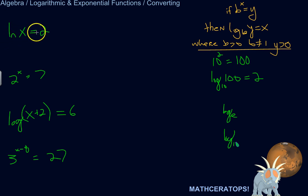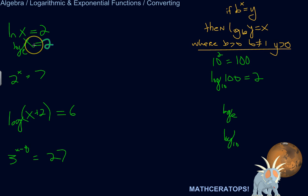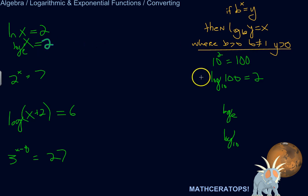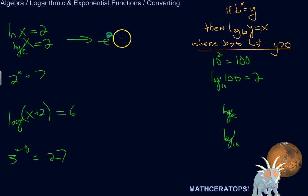Natural log of x equals 2. I'm going to rewrite that as log base E of x equals 2. That's saying: what power do I have to raise E to in order to turn it into x? Just like 10 squared equals 100 means log base 10 of 100 is 2, here we have log base E. So if I want to convert this, I can say E, the base, raised to the power of 2, is equal to x.